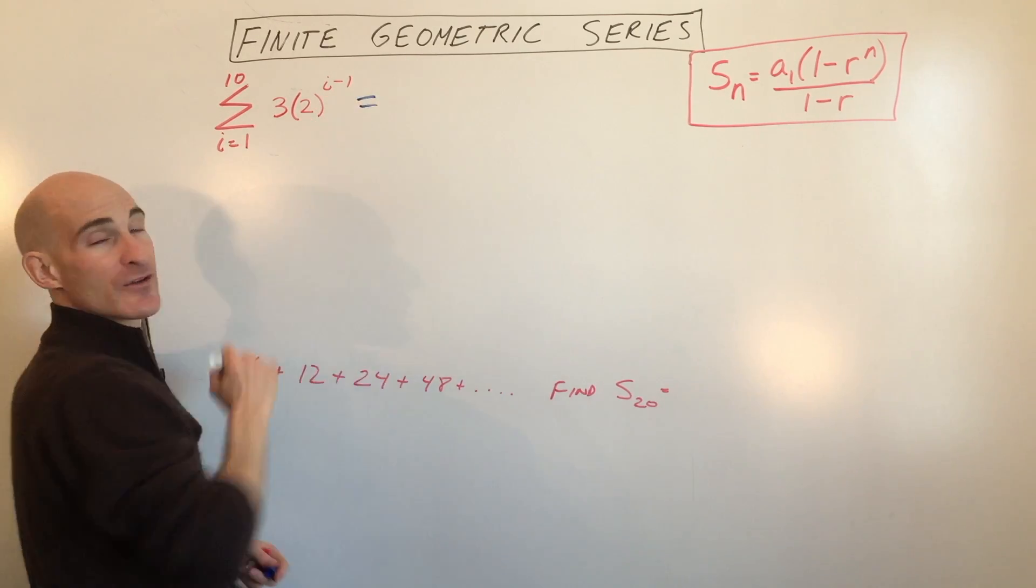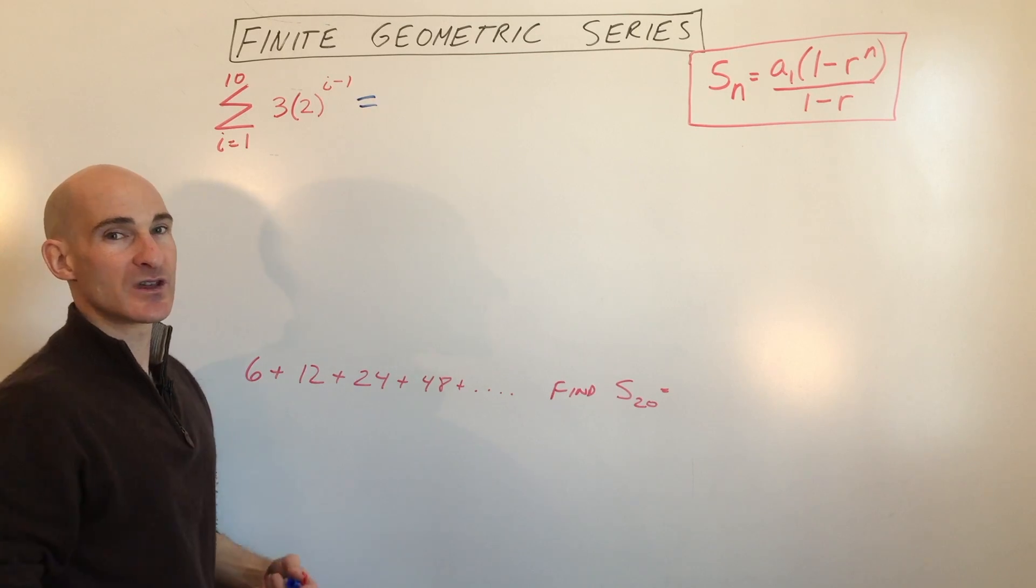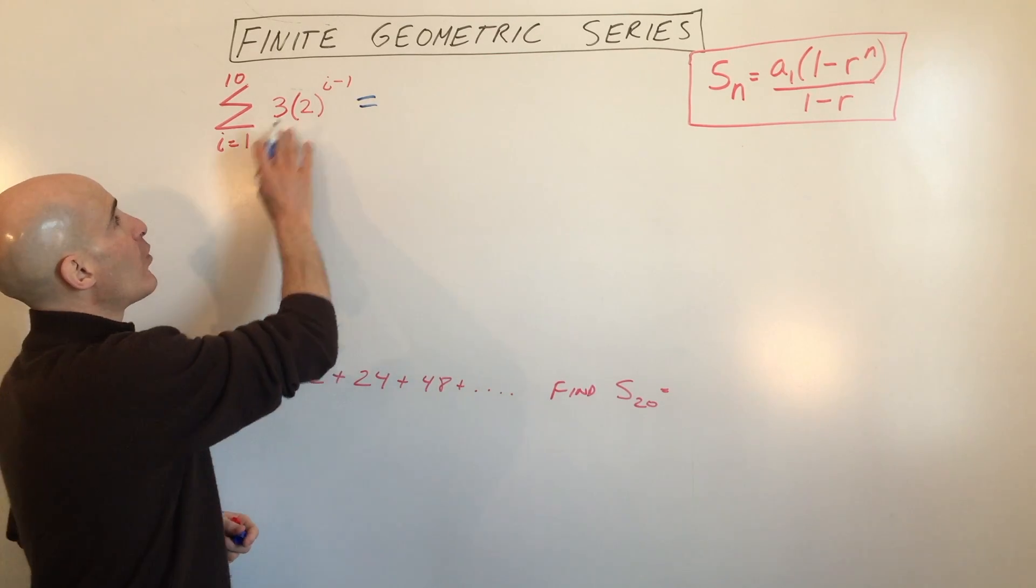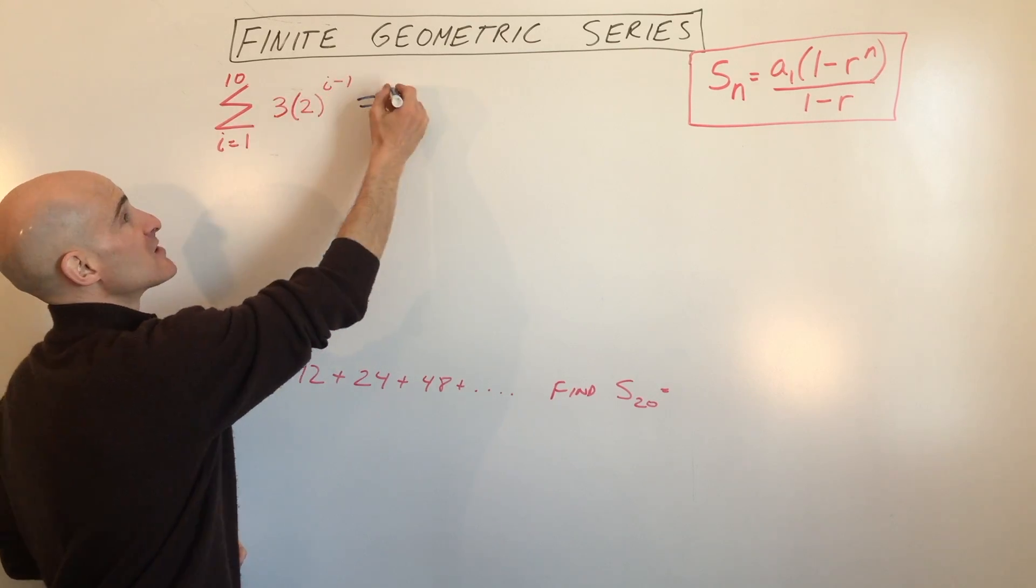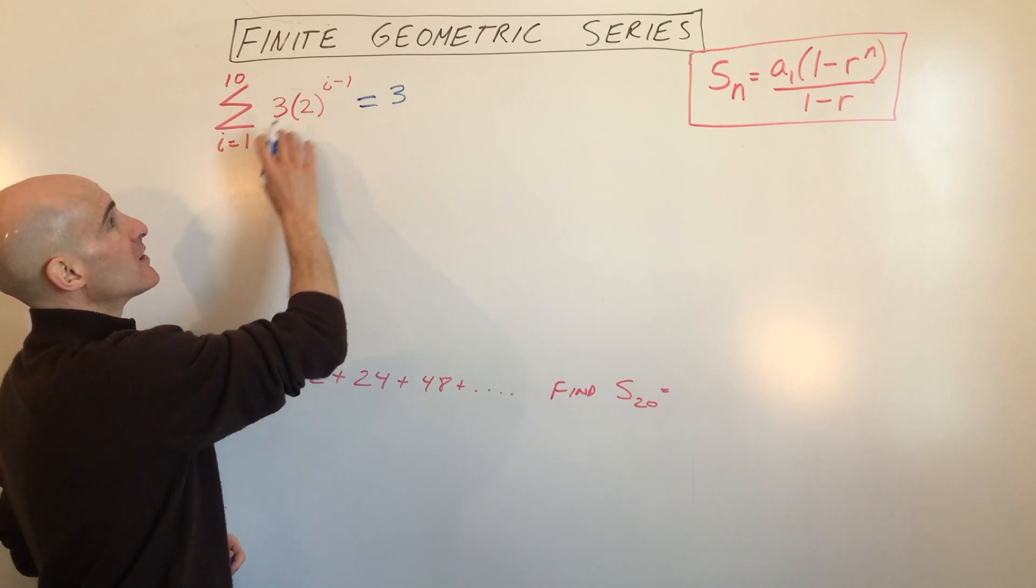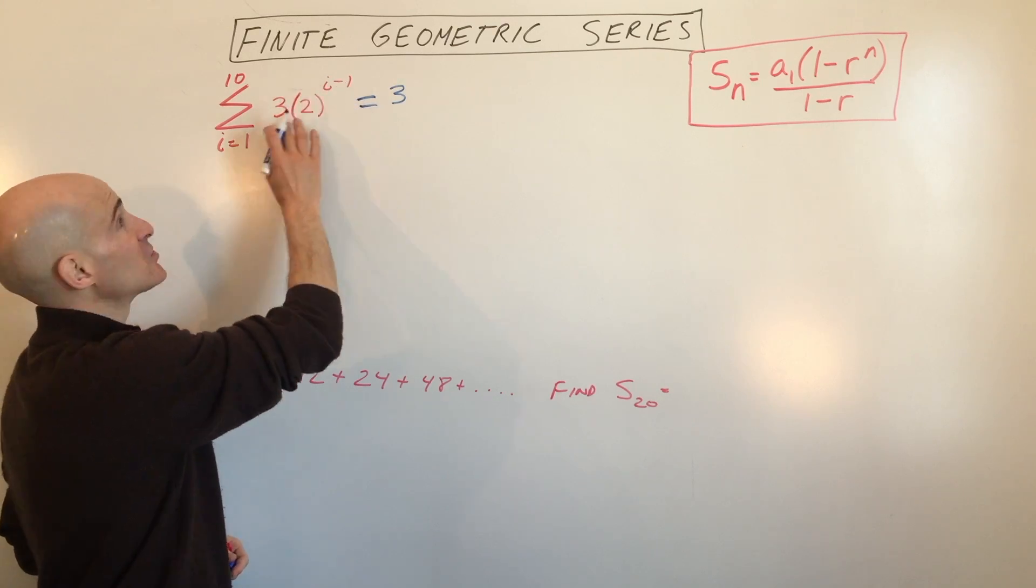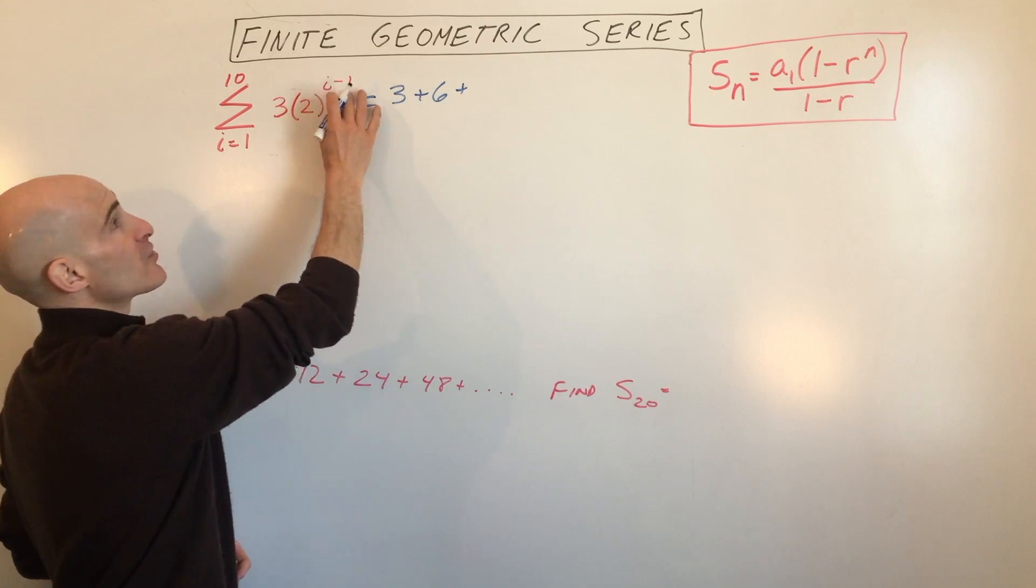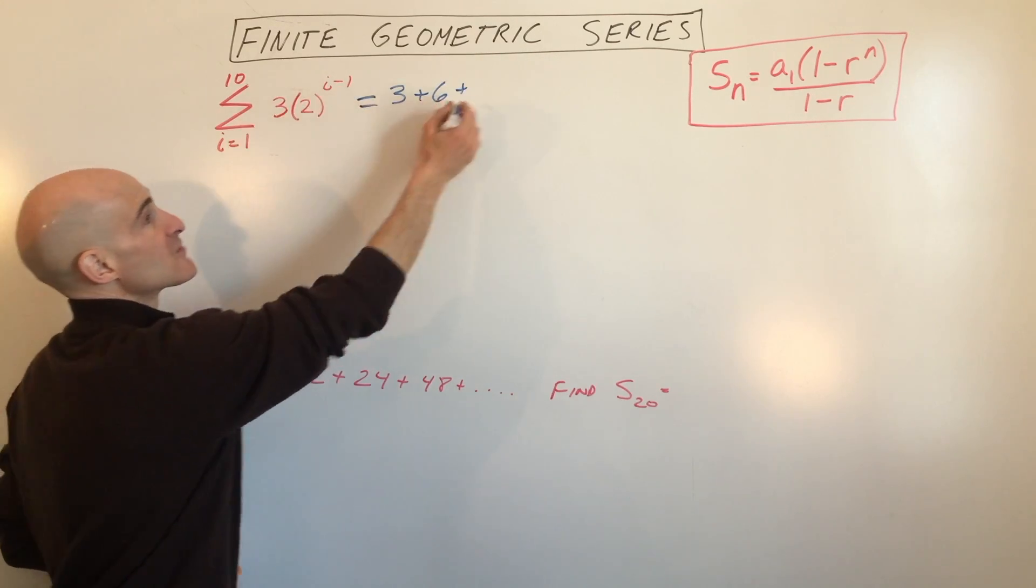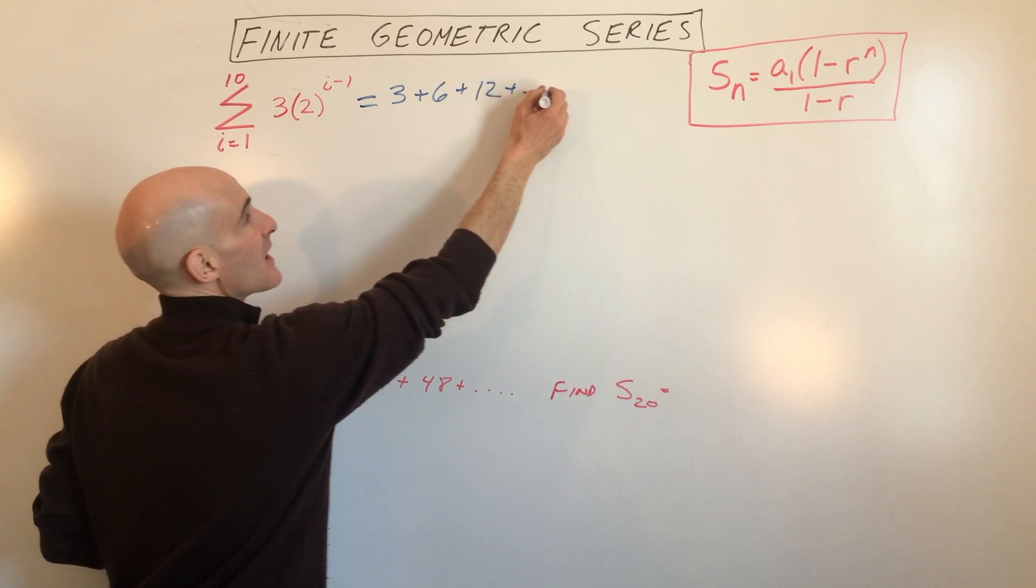So what I like to do is write a few of the terms down just to get a feel for what's going on. So if I put 1 in, 1 minus 1 is 0, 2 to the 0 is 1, times 3 is 3. If we put 2 in, we get 2 minus 1 is 1, 2 to the 1st is 2, times 3 is 6. If we put 3 in, 3 minus 1 is 2, 2 squared is 4, times 3 is 12, plus dot dot dot.